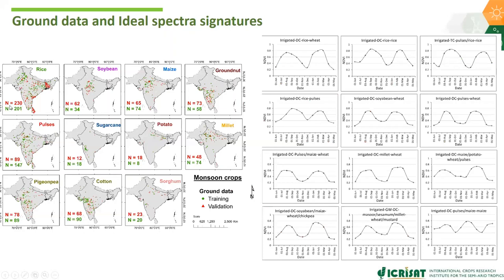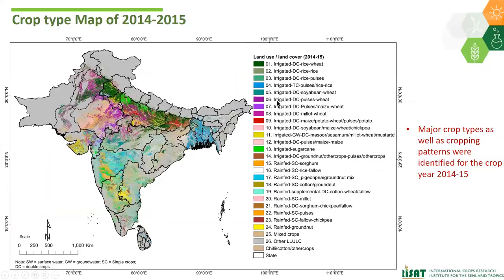For training data, we capture detailed information at specific locations including irrigation source, and we interview farmers and extension officers. Validation data is captured while driving along roads. Using training data, we extract ideal spectral signatures — for example, irrigated double crop rice-wheat system, irrigated double crop rice-rice system, and other major crops in South Asia. This is done similarly for rabi and summer seasons as well.